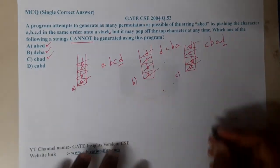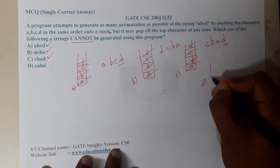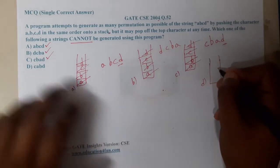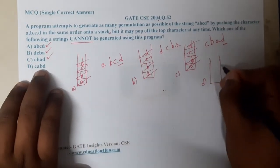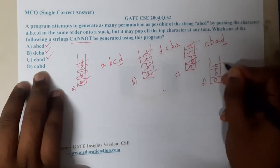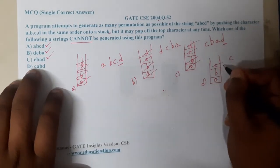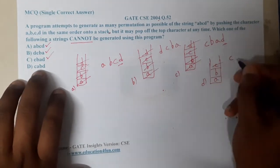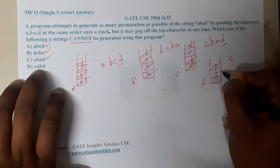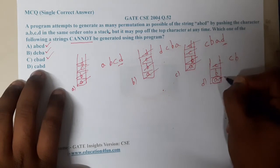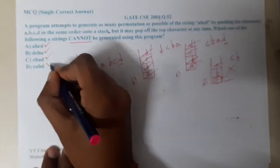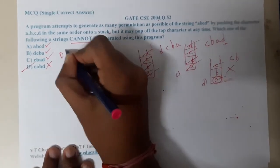Now the last option — one of them must be wrong. We push a, then b, then c, then pop c. But then they want a next. However, a is inside the stack; if you pop now you will get b, not a. So you cannot get a at this point — hence this sequence is wrong. Our answer is option D.